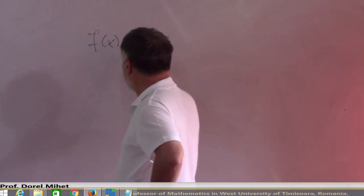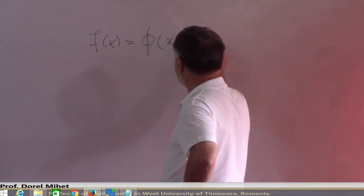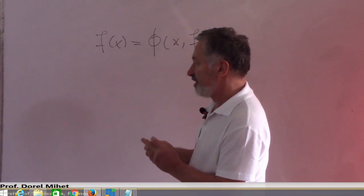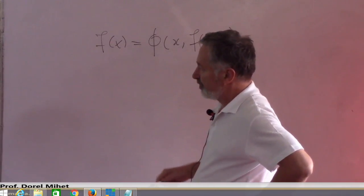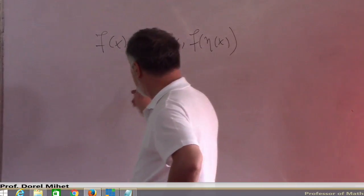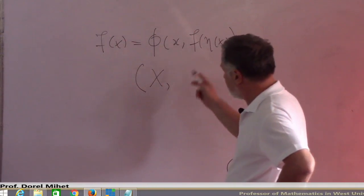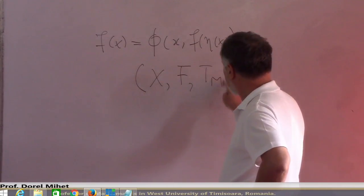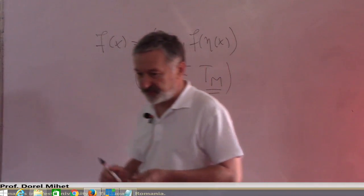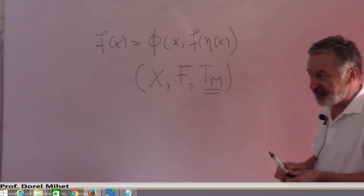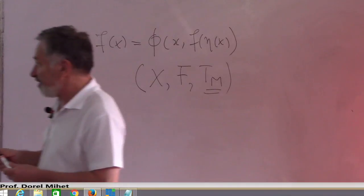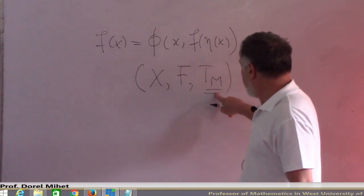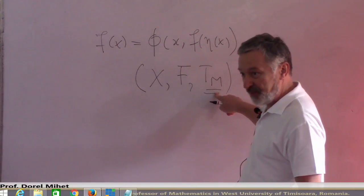This is the equation U by F, and you saw a result about the stability of this equation in complete Menger's probabilistic symmetric spaces under Tm. You know that Tm is the strongest T-norm, and it is desirable to weaken this T-norm.